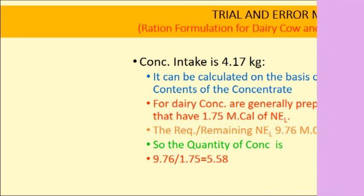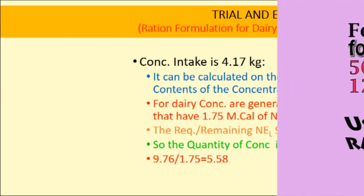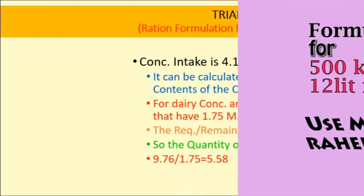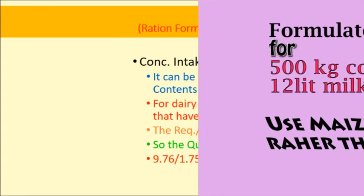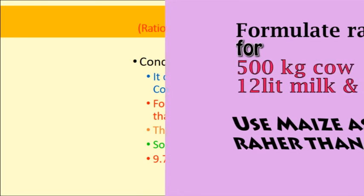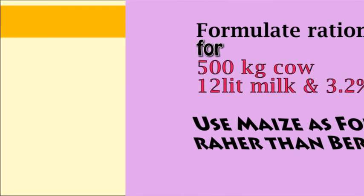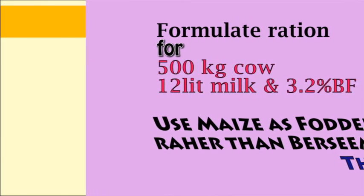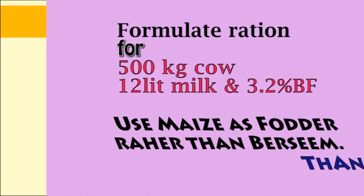Thank you for this practical on ration formulation. As a take-home question, formulate a diet for a 500 kg cow producing 12 liters of milk with 3.2% butterfat. The available feed stuff ingredients remain the same, but you must use maize powder as the green roughage component.